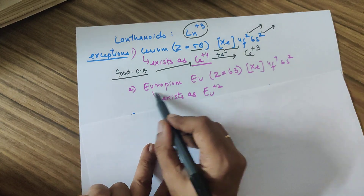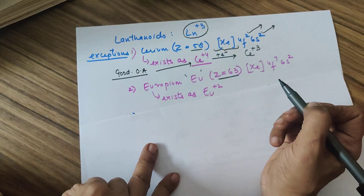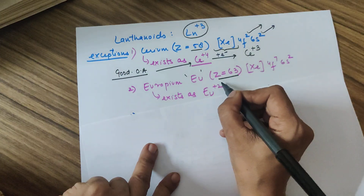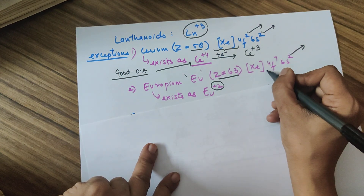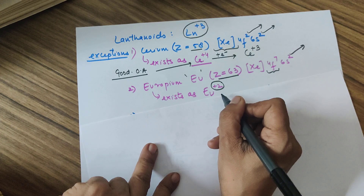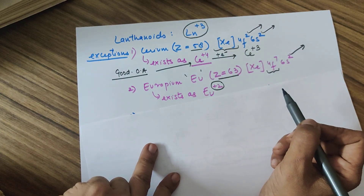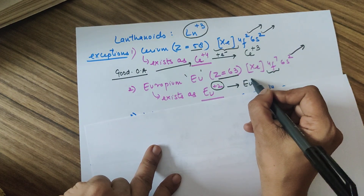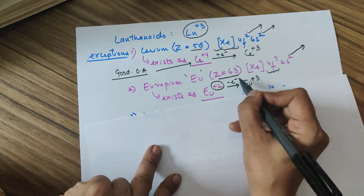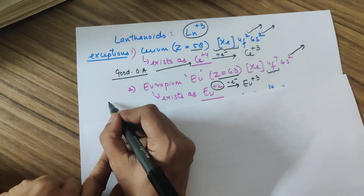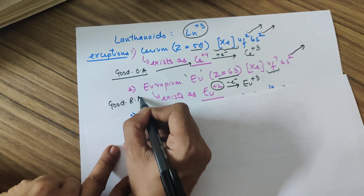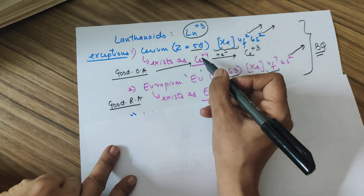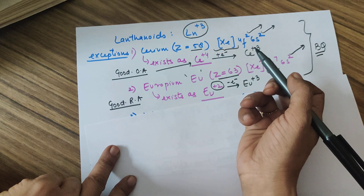The second exception is europium (Eu, Z=63). Its electronic configuration shows a half-filled 4f⁷ stable arrangement, so it prefers to show a +2 oxidation state rather than +3. Since Eu²⁺ would need to lose an electron to go to the common +3 state (oxidation), europium(II) acts as a good reducing agent. Both Ce⁴⁺ as oxidizing agent and Eu²⁺ as reducing agent have appeared in board questions.